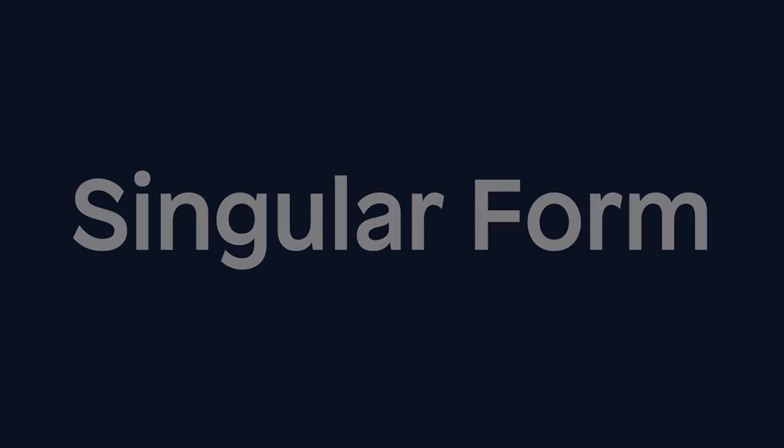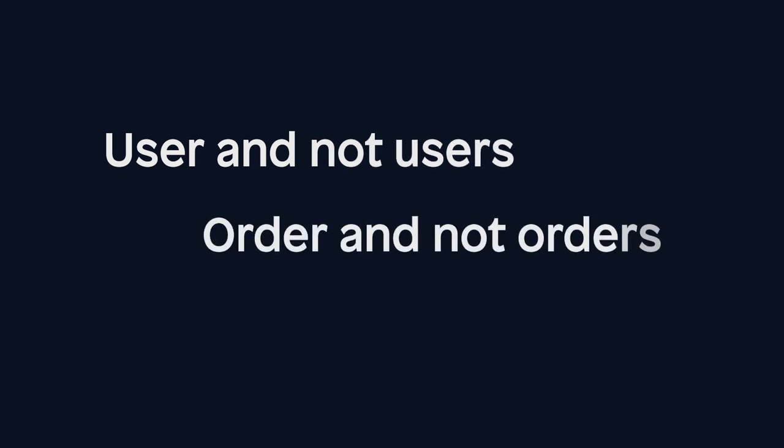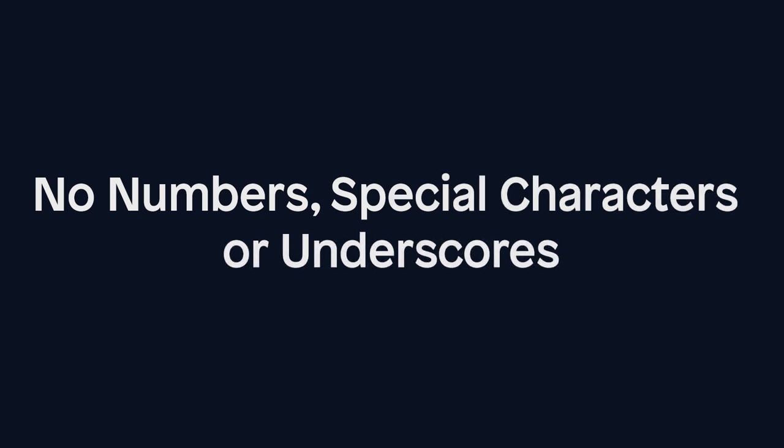Entities are slightly different, but we also use upper camel case. We use entities to reflect real-life objects you might find in life: products, people, assets. These things are usually tangible. They can also be records people might keep, for example, employee work time logs. Regardless of what it is, we should always try to use the singular form for the name — think User and not Users, Order and not Orders. You should also try to avoid using any numbers, special characters, or underscores in the name, as it can make it harder for other people to understand and maintain your work over time.